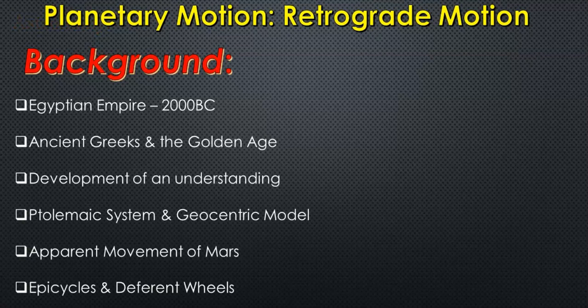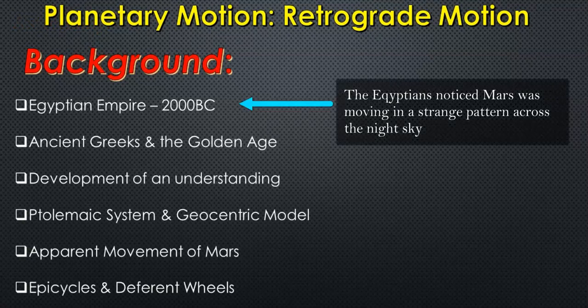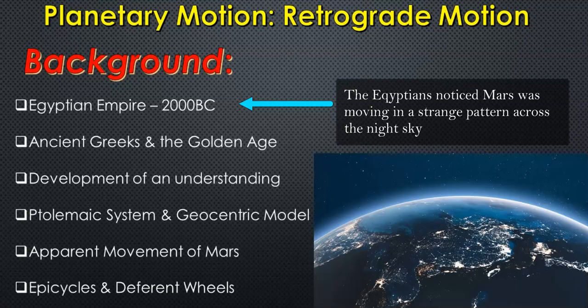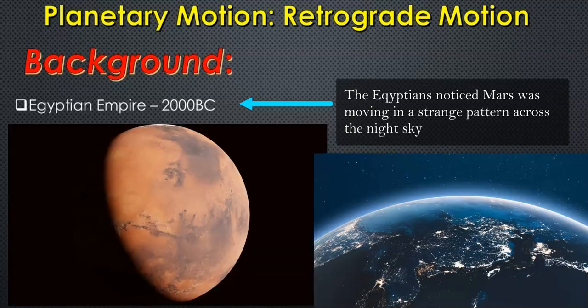Planetary motion and retrograde motion have been around since the Egyptian Empire. This is Mars moving across the night sky against the stationary stars. These ancient societies and people were witnessing planets moving across the night sky over the course of time, and they witnessed a strange movement that occurred with Mars in particular because it's the closest planet we could see doing this phenomena.